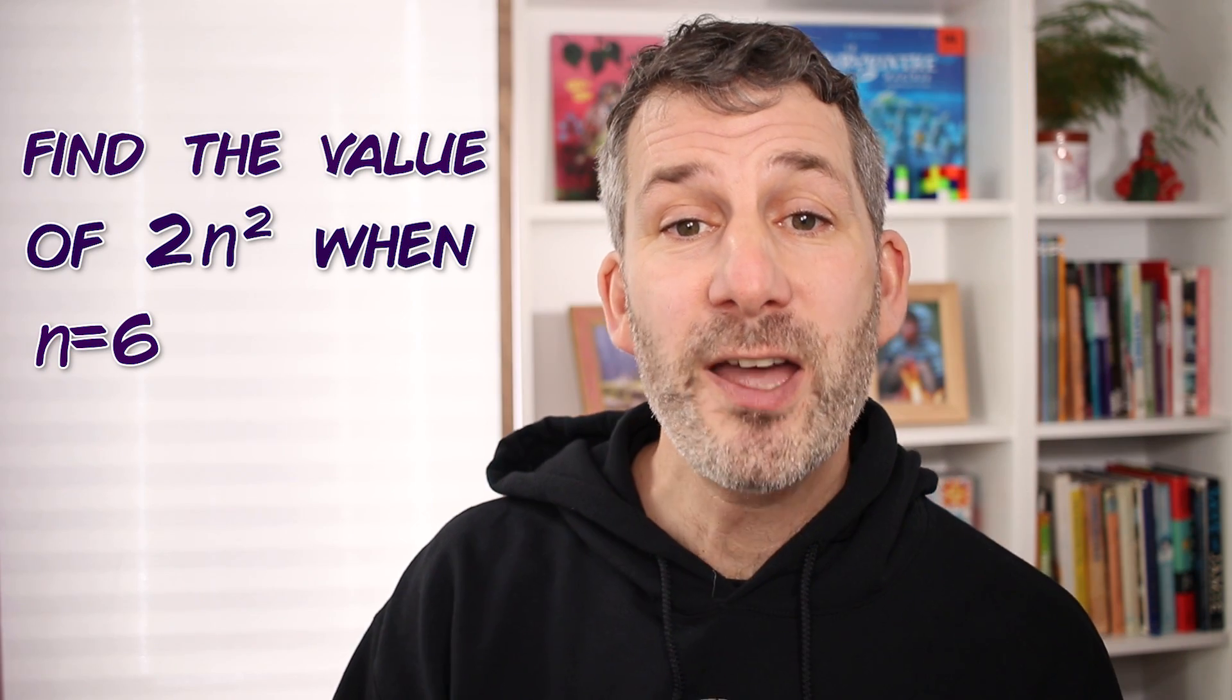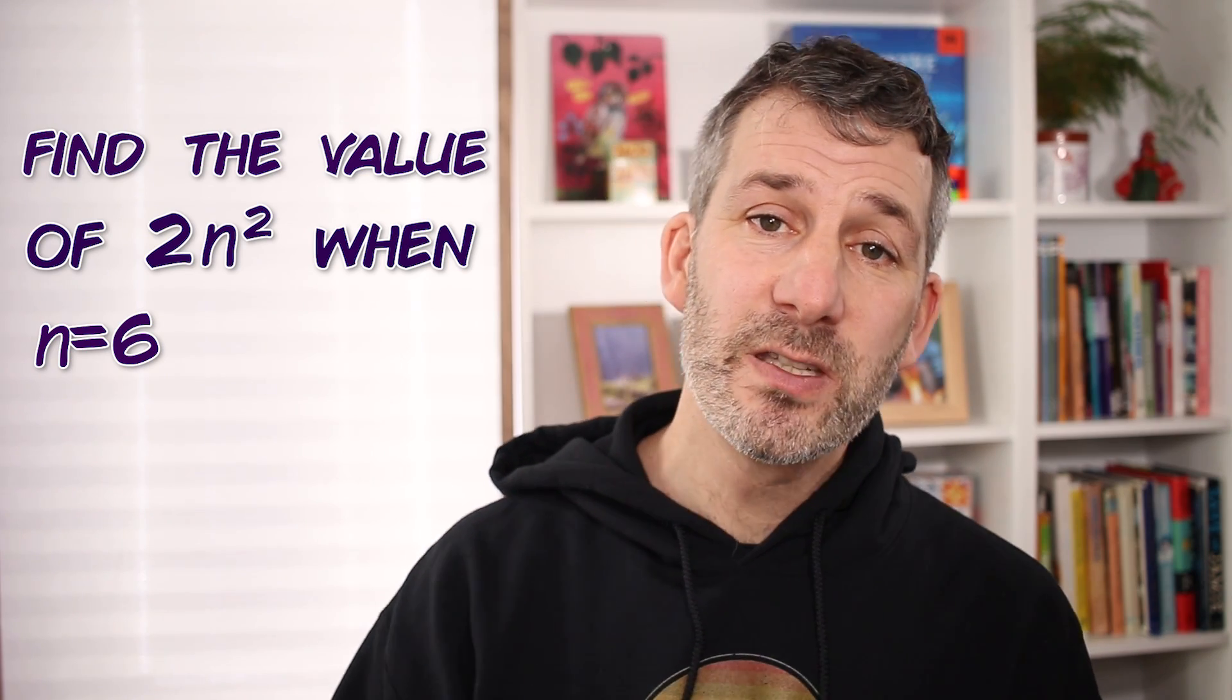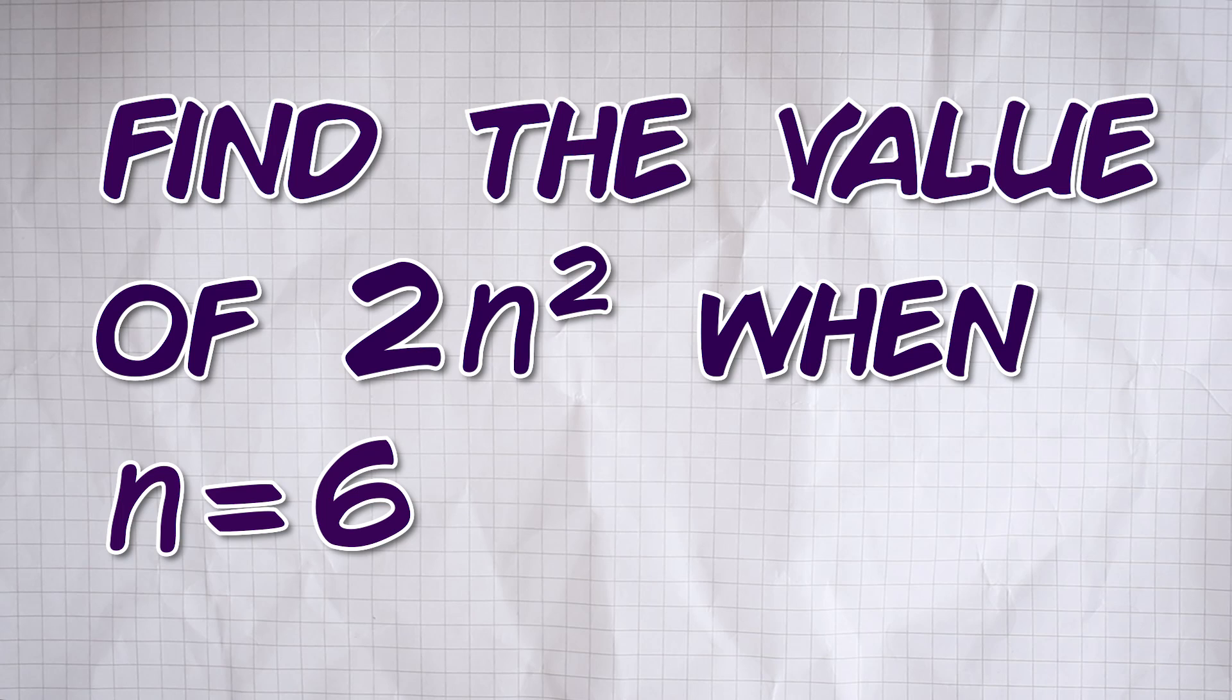The second common mistake that I see is this kind of thing: find the value of 2n squared where n is equal to 6. So you have to substitute 6 back into that and work out what you've got. I want you to have a go at this, so just take a second, pause the video if you need to, work it out, and what do you get for this?